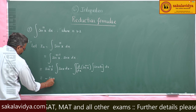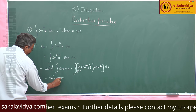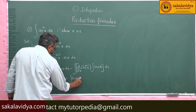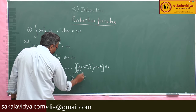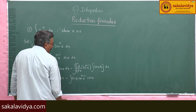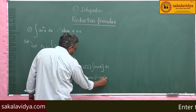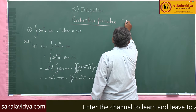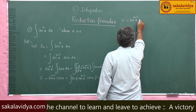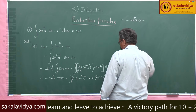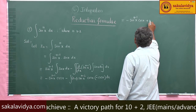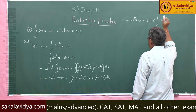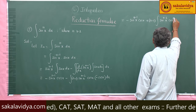So we get: minus sin x to the power of n minus 1 times cos x, and minus — the derivative of sin x to the power of n minus 1 is (n minus 1) times sin x to the power of n minus 2 times cos x, and the integral of sin x is minus cos x. Simplifying, this becomes: minus sin x to the power of n minus 1 cos x, and taking out common factors, minus times minus gives plus (n minus 1), common — sin x, integral of sin x to the power of n minus 2 cos squared x dx.